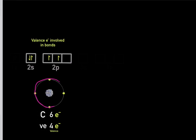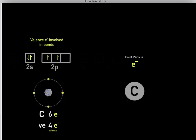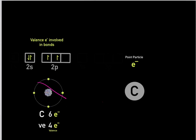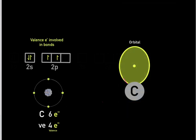Carbon happens to have four valence electrons in its outer orbitals. In a chemistry textbook, you would see a carbon atom with its nucleus and electrons orbiting around it. However, in reality, that's not true. We don't have a nucleus with a point-particle electron. In reality, we have an electron orbital with electron density, and this orbital tells us about the probability of where we'll find the electron.